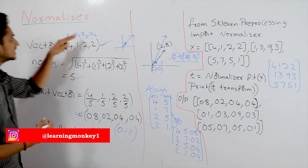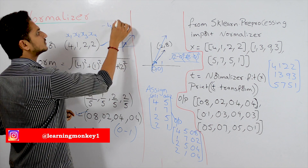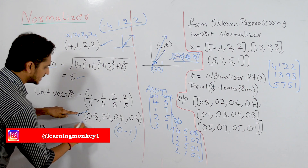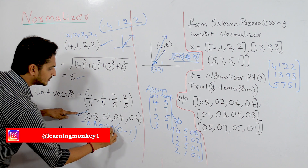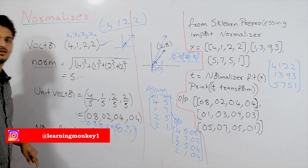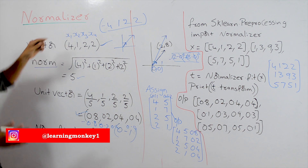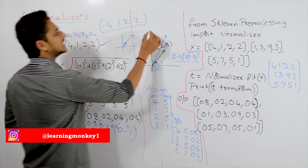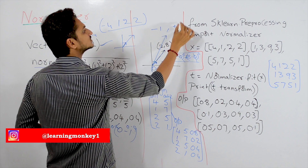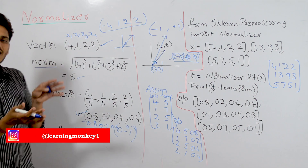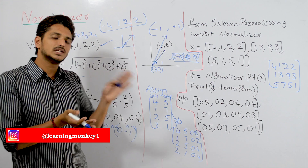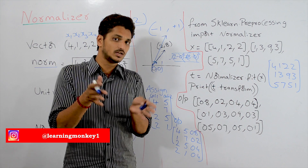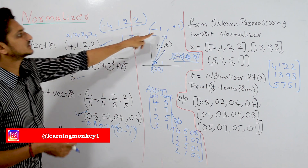This is the normalizing technique. Now consider a vector like (minus 4, 1, 2, 2). The unit vector for this is (minus 0.8, 0.2, 0.4, 0.4). So in normalizing, when you scale down the values, you may get values between minus 1 and plus 1. In min-max scaling we scale values to between 0 and 1, but in normalizing we scale down the values to between minus 1 and plus 1.